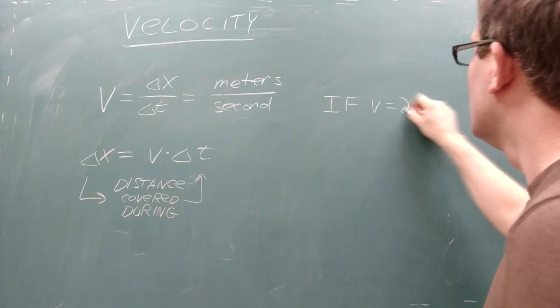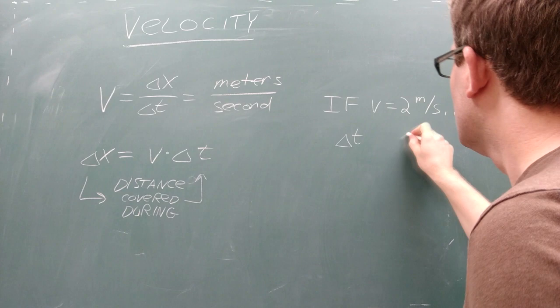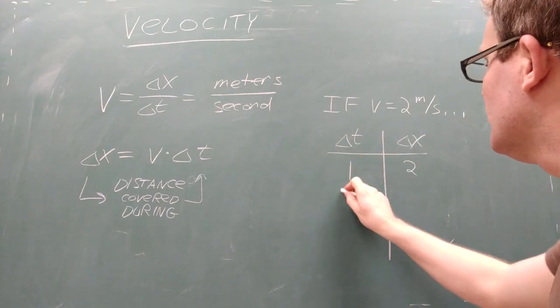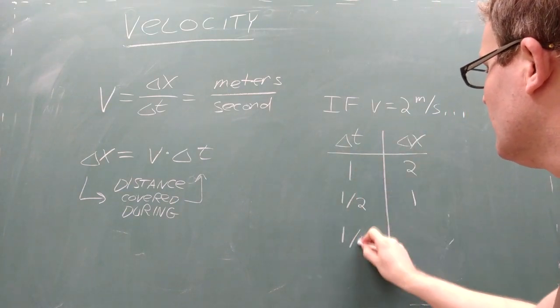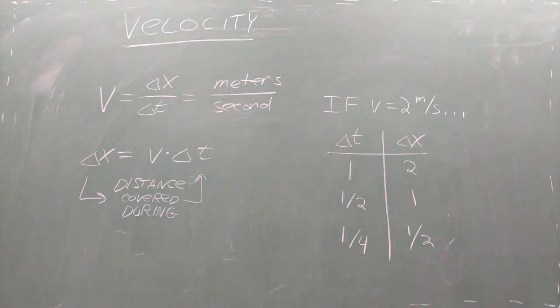So if your velocity is 2 meters per second, then every 1 second you're traveling 2 meters. Or every half a second you're traveling 1 meter. Or every quarter of a second you're traveling half a meter.